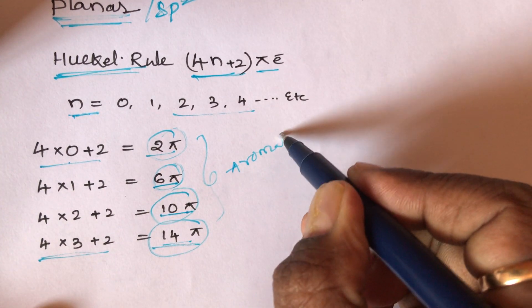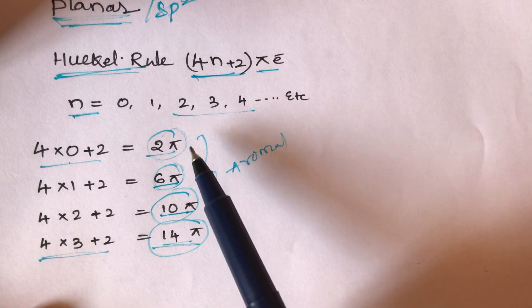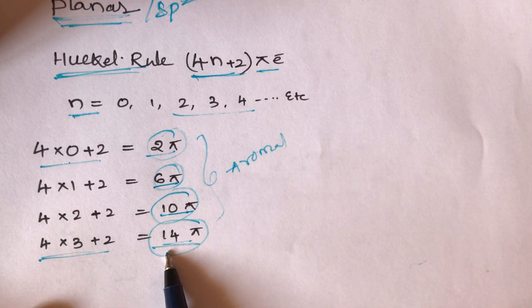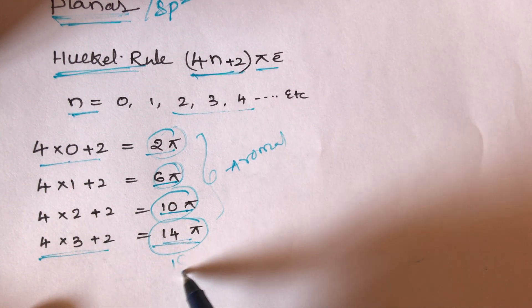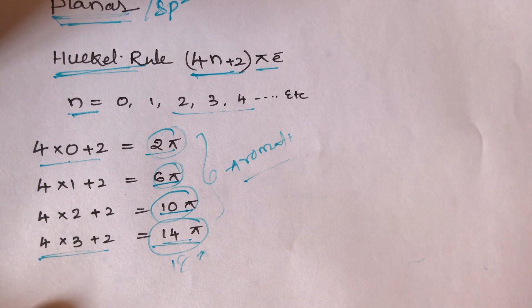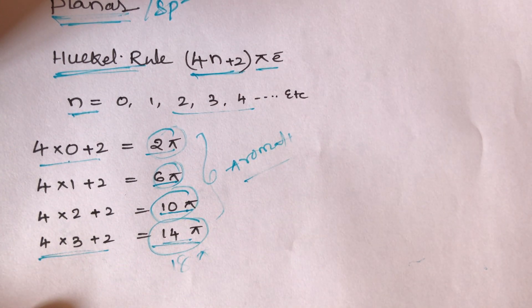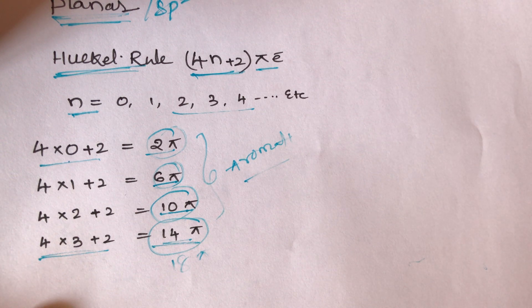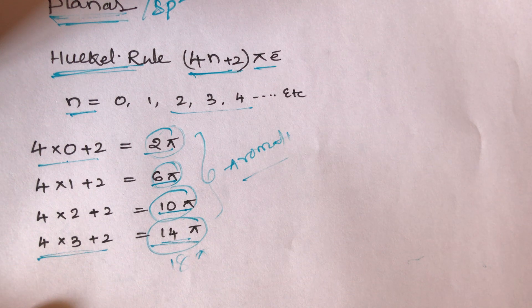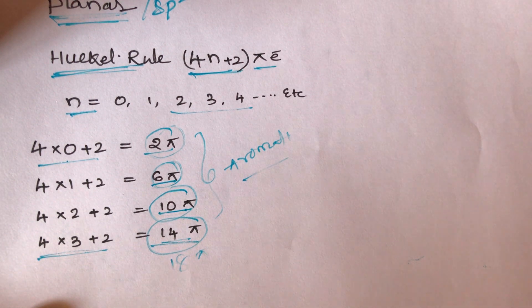So a compound containing 2, 6, 10, 14, or 18 pi electrons is always aromatic. To summarize the aromatic conditions: the compound must be cyclic, conjugated, planar (each carbon in SP2 hybridization), and must follow Hückel's rule (4n + 2 pi electrons).